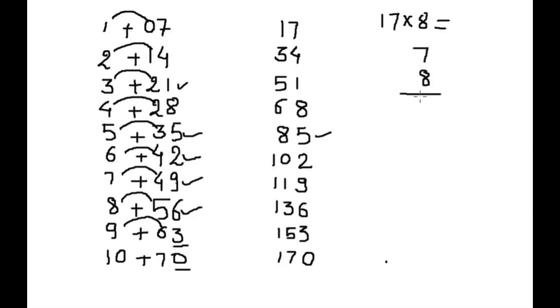7×8 is 56, and plus 8. You can write 6 as it is, and 13. Here is your 17 times table, 17×8.